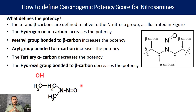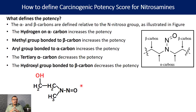Another important point is that the presence of a hydroxyl functional group (–OH) on the beta carbon also reduces the carcinogenic potency of the nitrosamine. A compound with a hydroxyl group on the beta carbon will have a higher acceptable intake compared to the same compound without that hydroxyl group at the beta carbon.